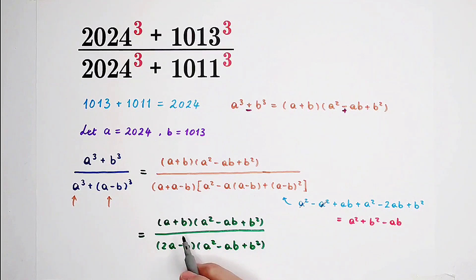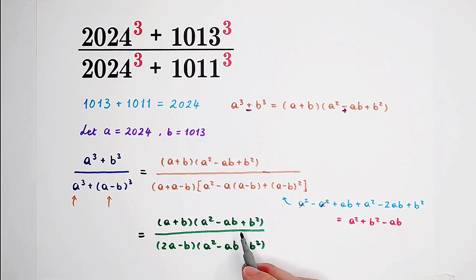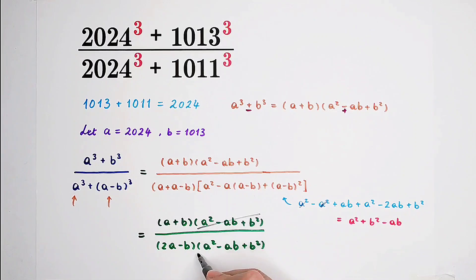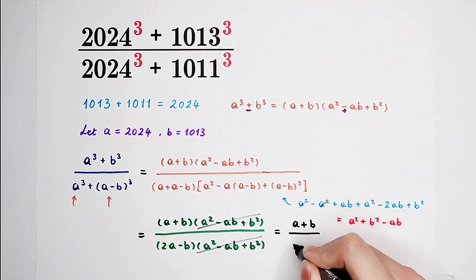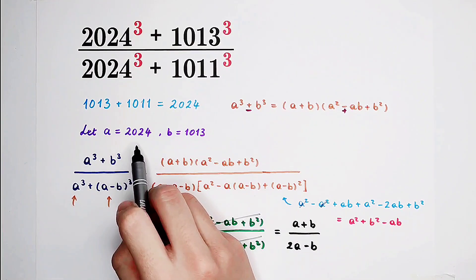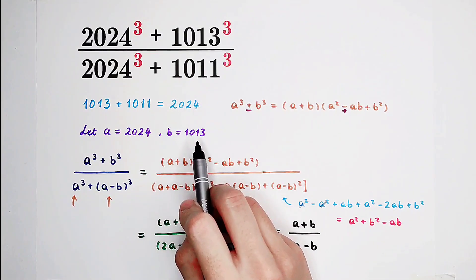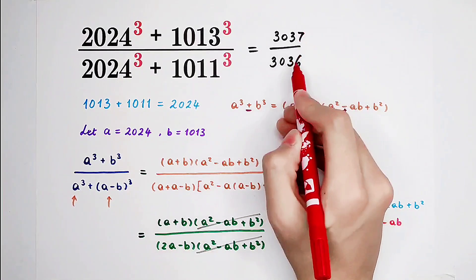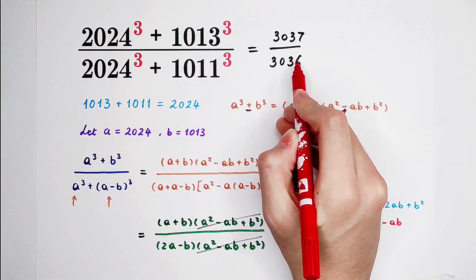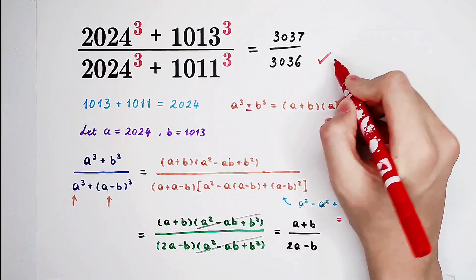Now you can find out that a squared minus ab plus b squared appears in both the numerator and the denominator at the same time. Both disappear. And the result is just a plus b over 2a minus b. What is a? 2,024. What is b? 1,013. Since the greatest common divisor of the numerator and the denominator is 1, it cannot be simplified further. This is our final answer.